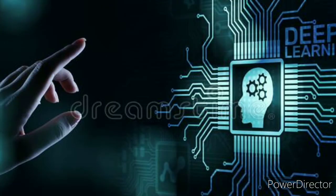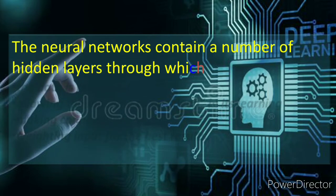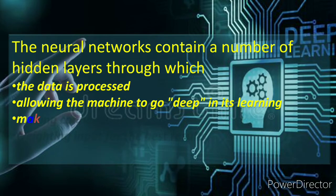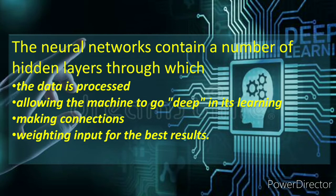The next thing is how it is going to work and what happens in the neural network. The data is processed, allowing the machines to go deep in their learning. You have a layered structure, one channel tagged with the other, just like the neural network works. They go deep into learning, making connections and weighting input for the best results. These different layers scan and induce a proper, vivid perception at the ultimate layer.